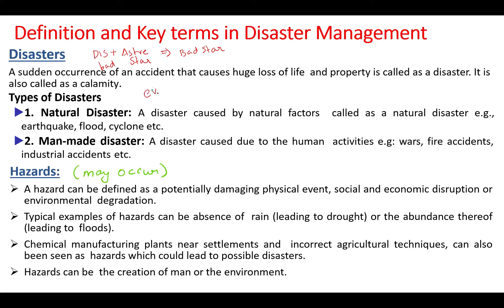We can also say that disaster is an event or series of events which can give rise to a huge amount of casualty, damages, loss of property, infrastructure, environment and necessary services. It can affect the livelihood on such a scale that it may be beyond the affected person or community to cope up with. For example, an earthquake happening very strongly at a place where nobody is living, like a desert — no matter how strong it may be, it can't be called a disaster. The earthquake can be called a disaster only when it happens at a place where many people live or dwell.